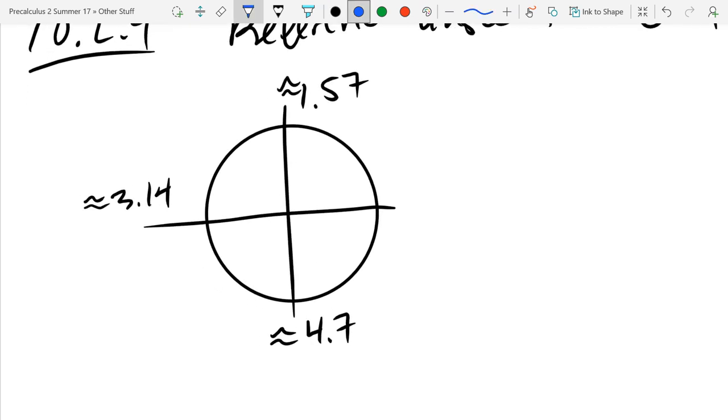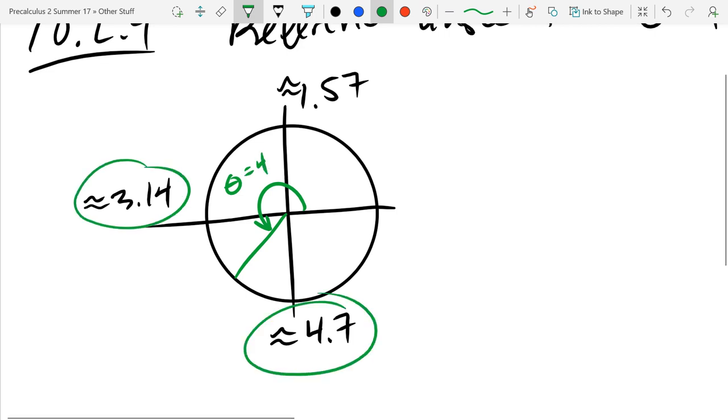This tells me our angle θ is 4, which I had to know. 4 was between these two numbers. That's the only reason I wrote the decimal versions down. So there's 4.